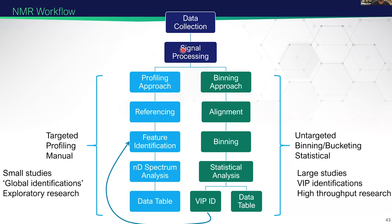NMR has a similar divergence as we saw with mass spec. On the left-hand side, after basic processing, you have a targeted pipeline, also known as profiling or manual. This is really useful for small studies where you want to identify as many features as possible doing exploratory research, but it's time-intensive and requires specialized skills. On the other side, there are untargeted or binning/bucketing statistical approaches where you can process many more samples and mostly automated, but you don't get identifications out of it. You actually end up using some bits of both pipelines to really complete a whole study.